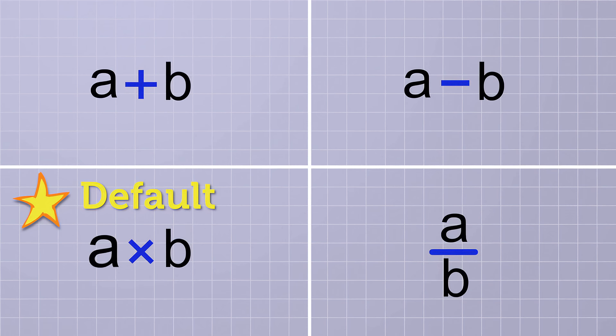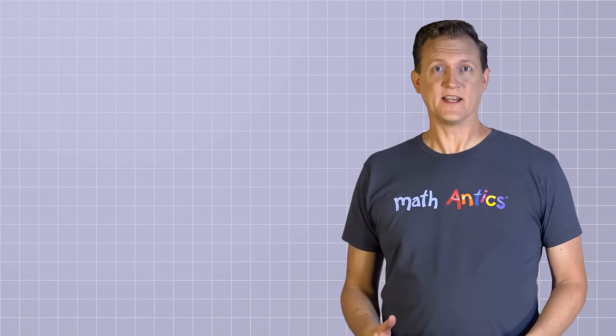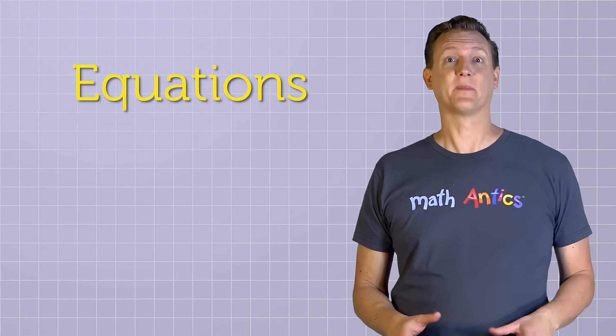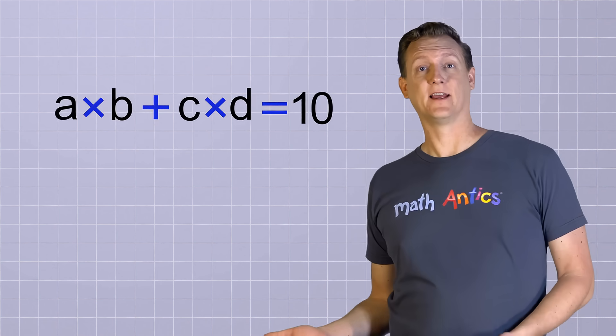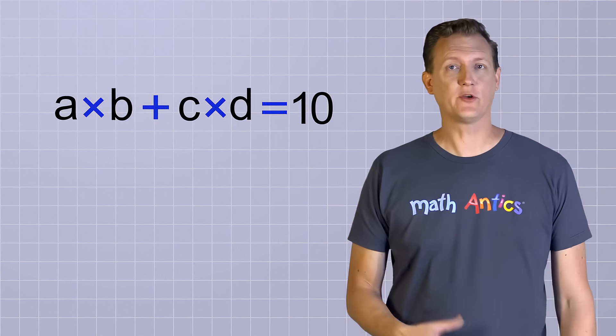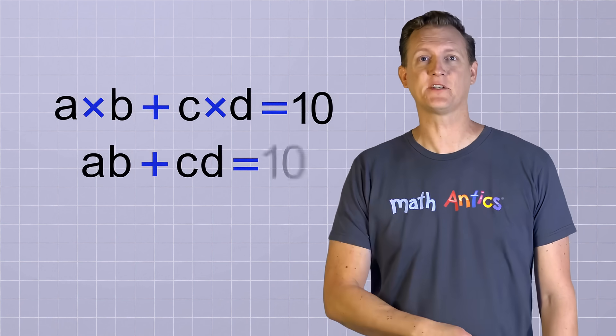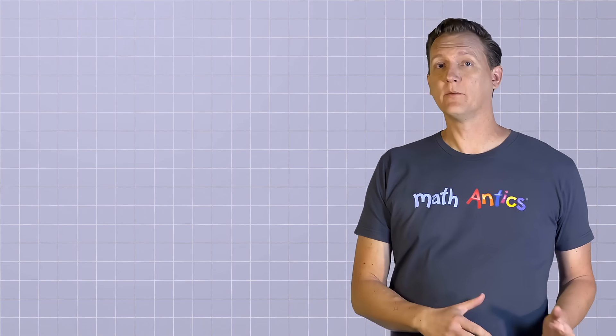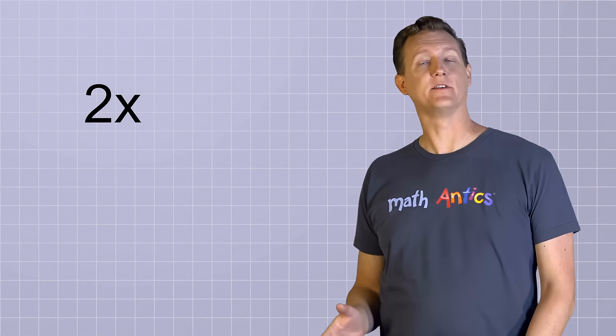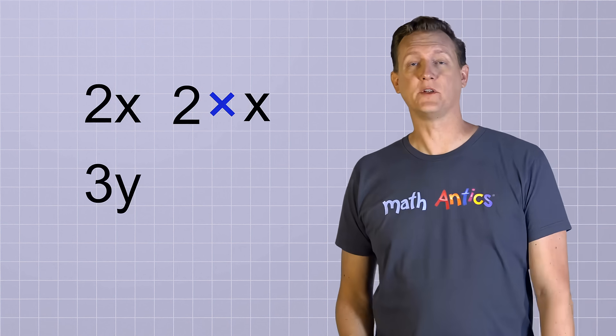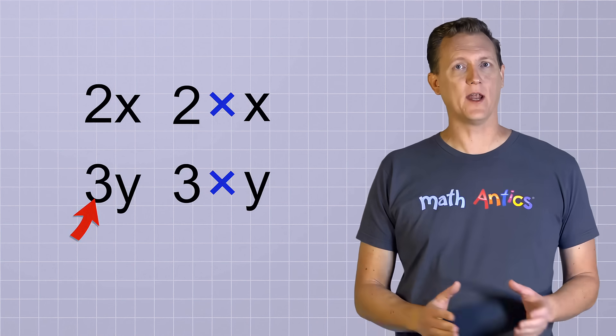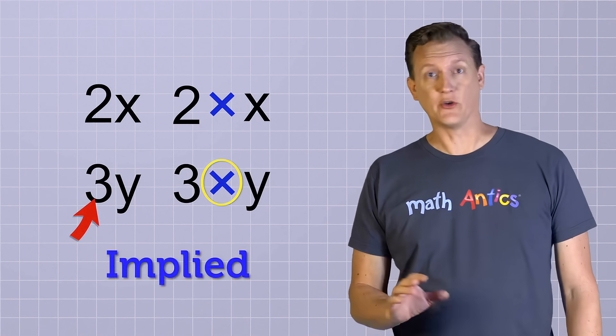For example, instead of writing A times B, you can leave out the times symbol and just write AB. Since no operation is shown between these two symbols, you know that you're supposed to multiply A and B. Of course, you can't actually multiply A and B until you figure out what numbers they stand for. The advantage of this rule about multiplication is that it makes many algebraic equations less cluttered and easier to write down. For example, instead of A times B plus C times D equals 10, you can just write AB plus CD equals 10. You can also use this shorthand when you're multiplying a variable and a known number, like 2x, which means the same thing as 2 times x, or 3y, which means the same thing as 3 times y. Since the symbol and the number are right next to each other, the multiplication is implied. You don't have to write it down.